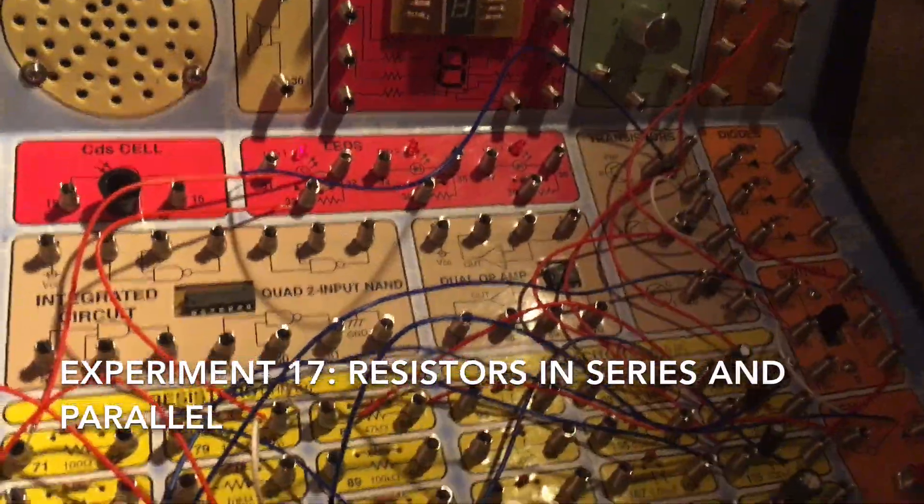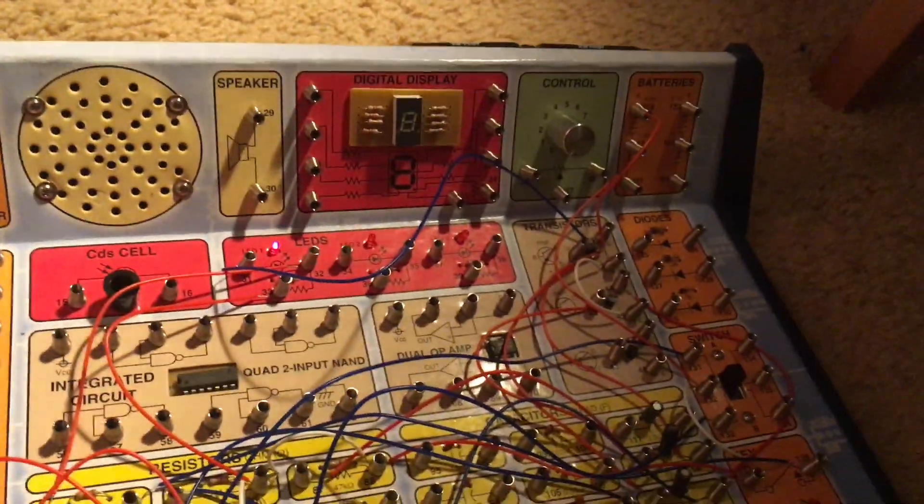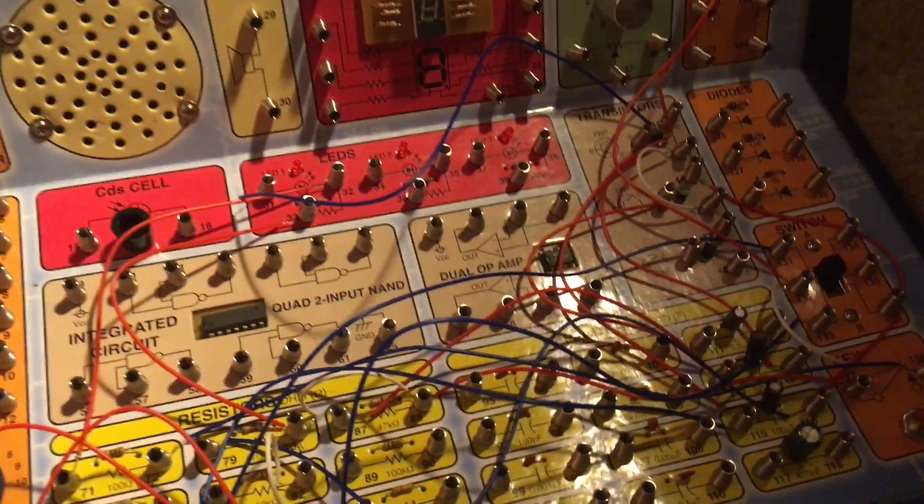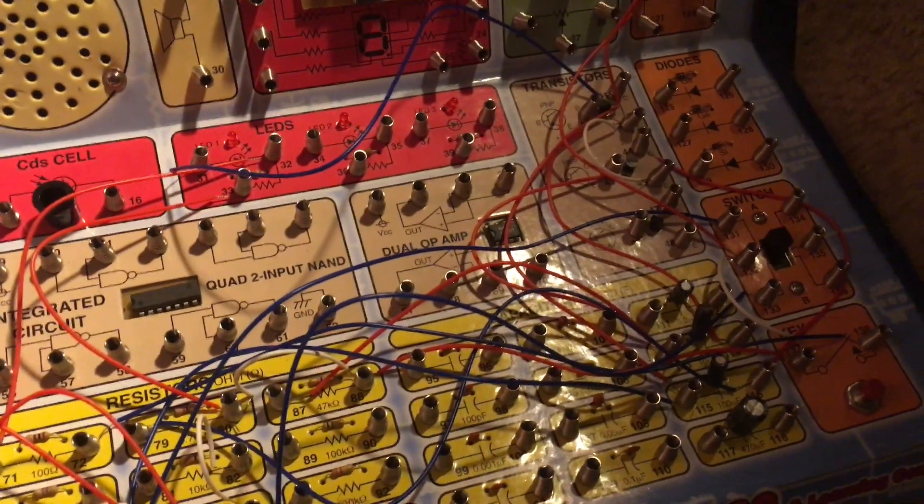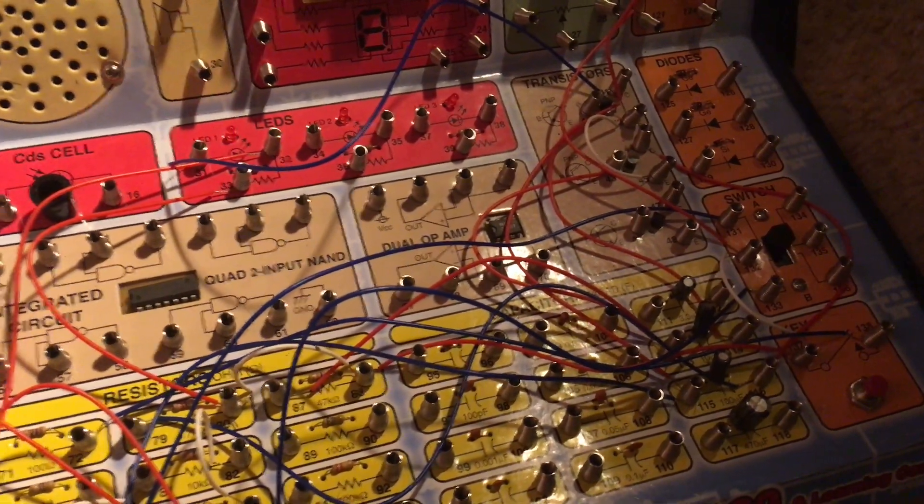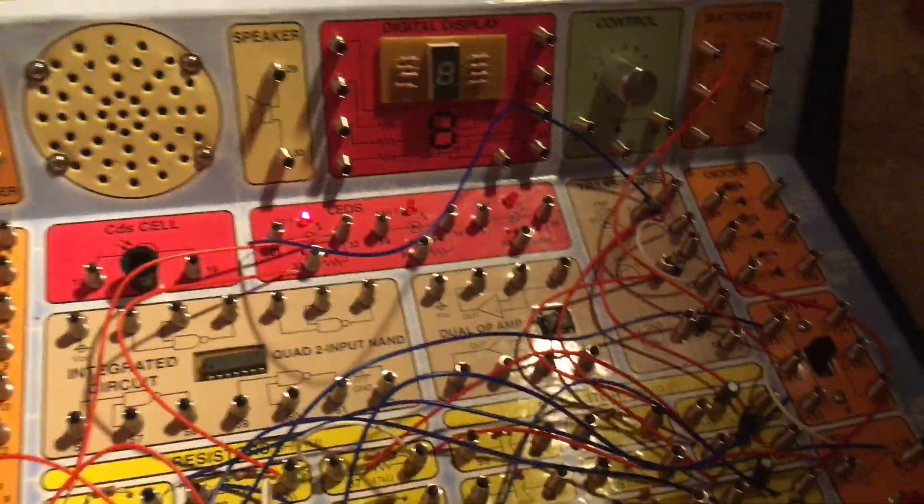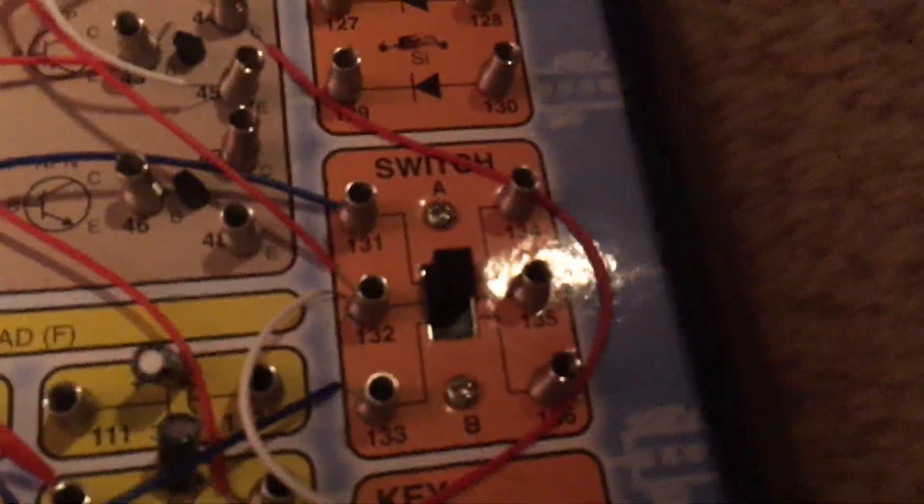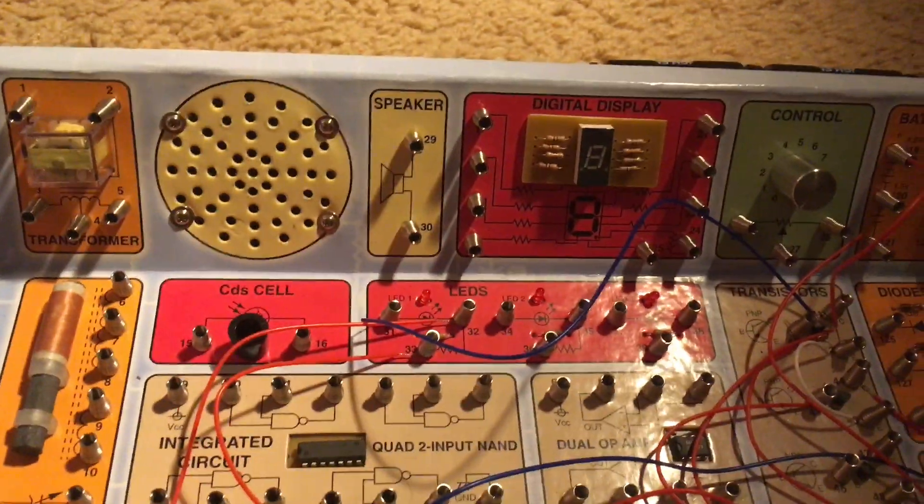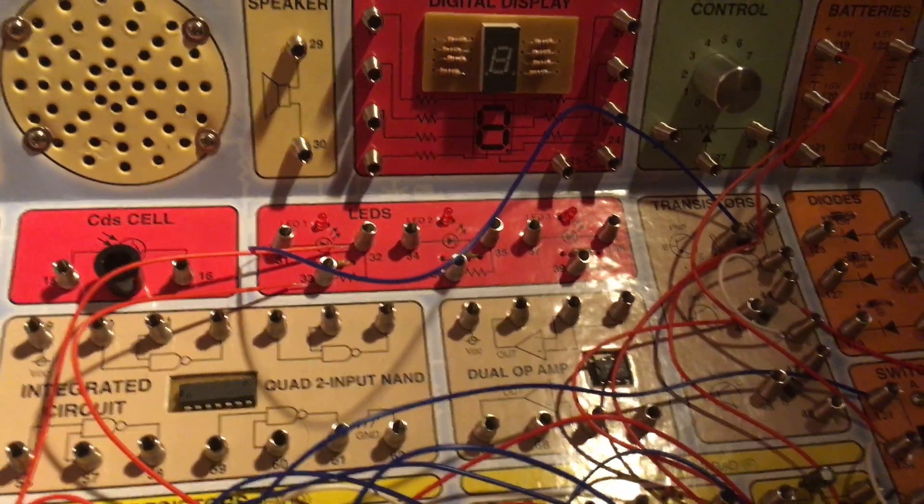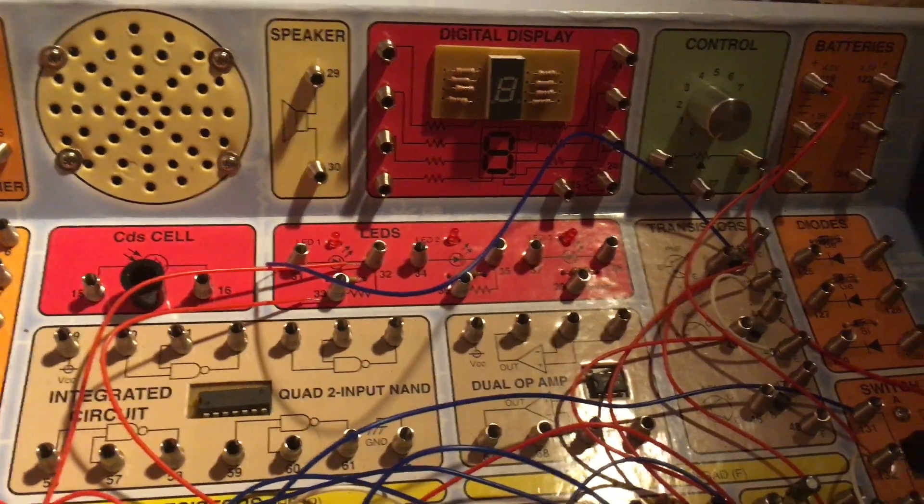Experiment 17 is resistors in series and parallel. This experiment will show you what can happen when resistors, devices that limit the flow of electric current, are connected either in series or in parallel. I'm starting with the slide switch set to position A when there are two 10,000 ohm resistors connected in series.